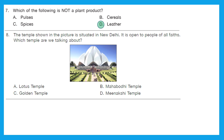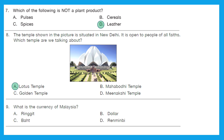Question 8: The temple shown in the picture is situated in New Delhi and is open to people of all faiths. The figure looks like a lotus — it is the Lotus Temple, which is situated in New Delhi. Option A is the right answer.